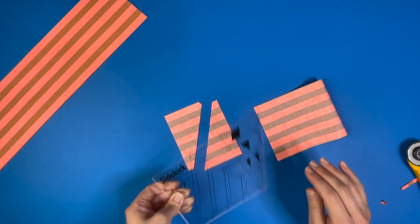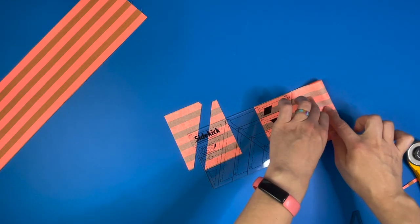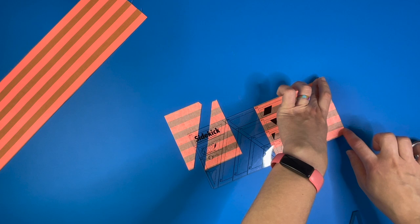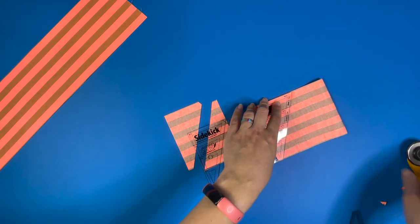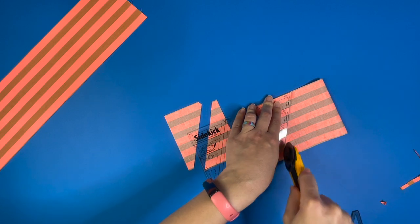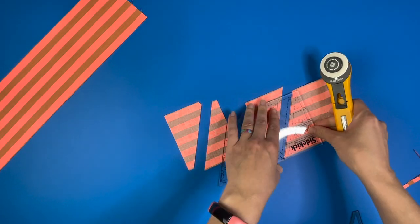You can easily cut these with the sidekick ruler as well and if this is kind of getting in the way, this bubble, you can just go ahead and finger press it. Trim, rotate it around, and trim.